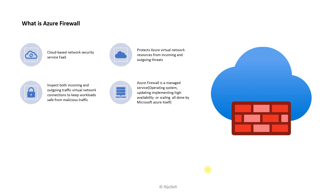Azure Firewall is a cloud-based security service — firewall as a service — provided by Microsoft Azure. It protects your virtual network resources from incoming and outgoing threats, inspects traffic, and keeps your workloads safe from malicious traffic. Azure Firewall is a managed service, meaning Microsoft handles operating system updates, high availability, and scaling, so you don't need to worry about those aspects.